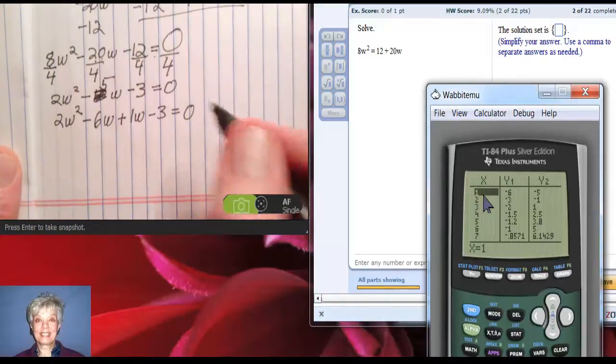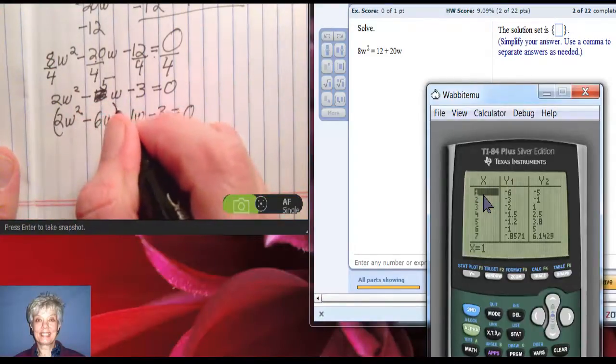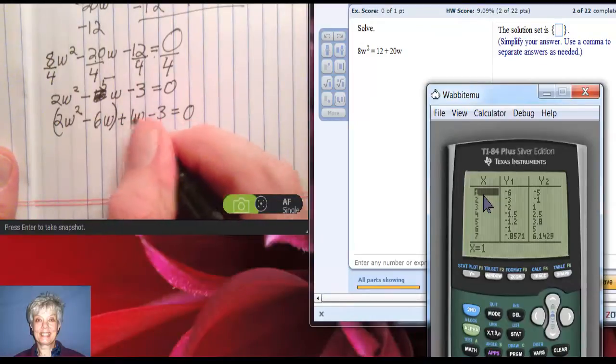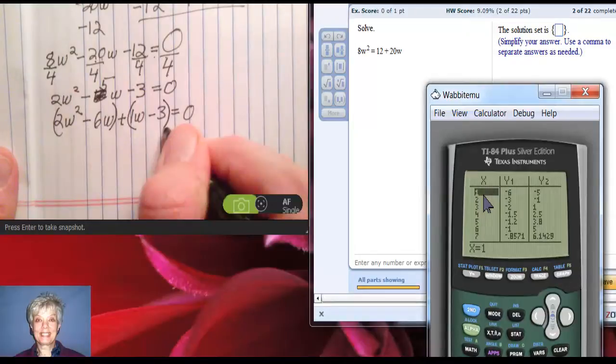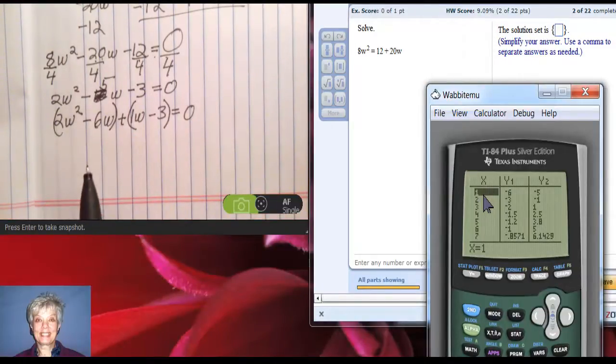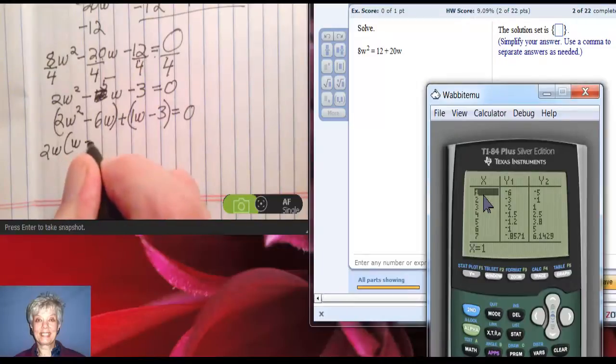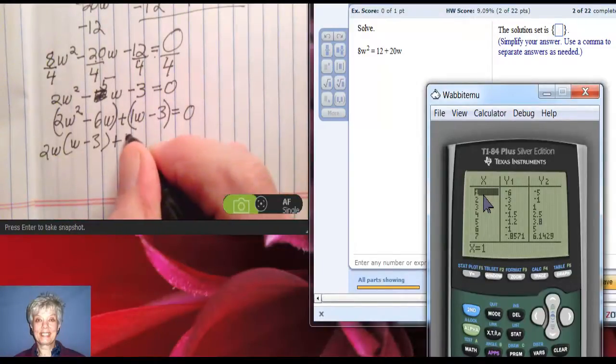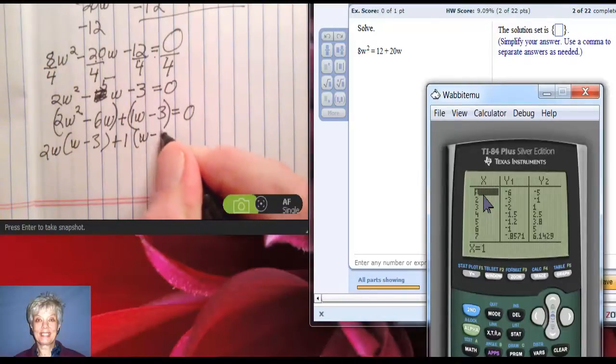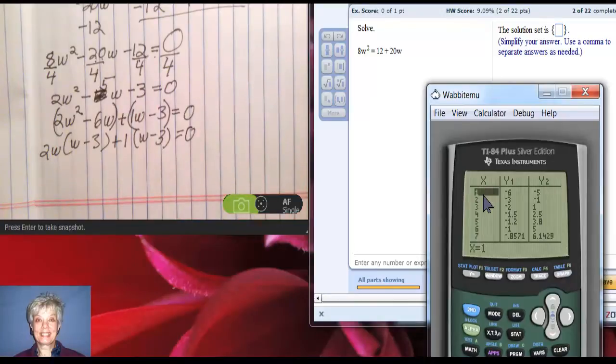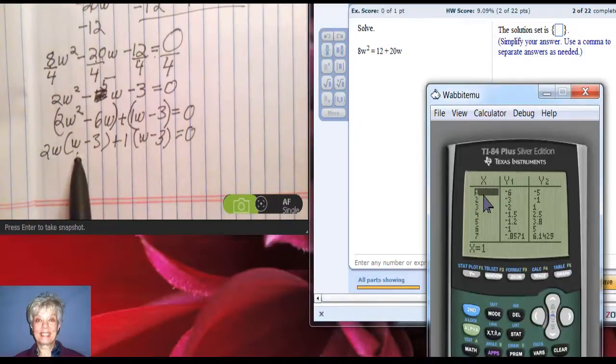And now I'm going to factor by grouping. Put parentheses around the first two terms. Leave the plus sign in the middle. Put parentheses around the second two terms. Factor the first set of parentheses by the greatest common factor, which will be 2w times (w - 3) plus 1 times (w - 3) = 0. See, there wasn't a GCF in there, so I put 1. Thank goodness the w - 3 matches the w - 3. That becomes my new GCF. I say (w - 3) times the leftovers, 2w + 1.